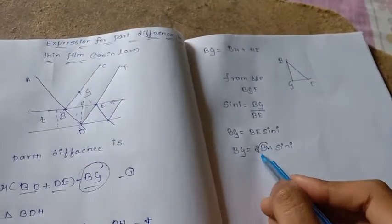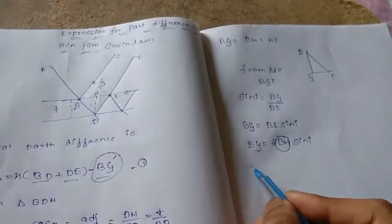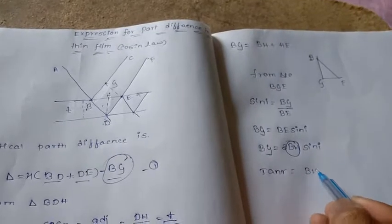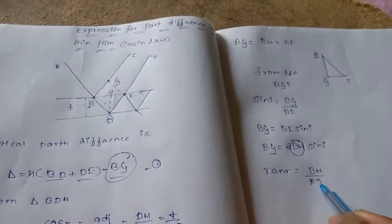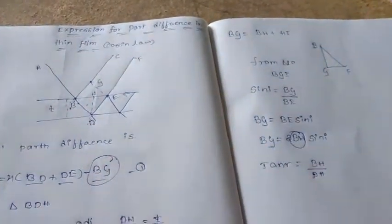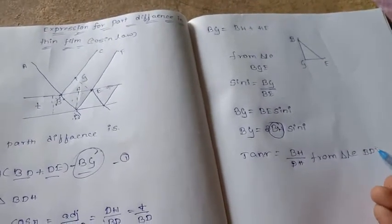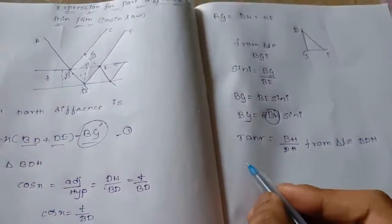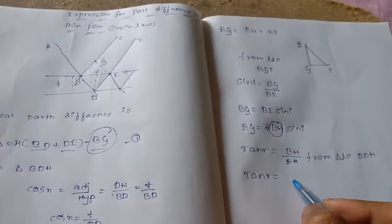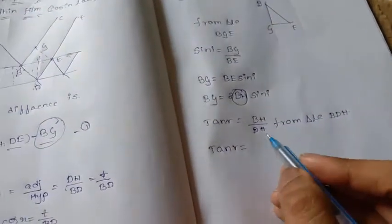For finding the value of BH, I'm going to take the triangle and apply tangent. From triangle BDH, tan R equal to BH by TH. The BH is the thickness of thin film T.